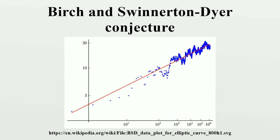Gross and Zagier showed that if a modular elliptic curve has a first-order zero at s equals 1, then it has a rational point of infinite order (the Gross-Zagier theorem). Kolyvagin showed that a modular elliptic curve E for which L is not zero has rank zero, and a modular elliptic curve E for which L has a first-order zero at s equals 1 has rank 1. Rubin showed that for elliptic curves defined over an imaginary quadratic field K with complex multiplication by K, if the L-series was not zero at s equals 1, then the p-part of the Tate-Shafarevich group had the order predicted by the Birch and Swinnerton-Dyer conjecture for all primes p greater than 7.